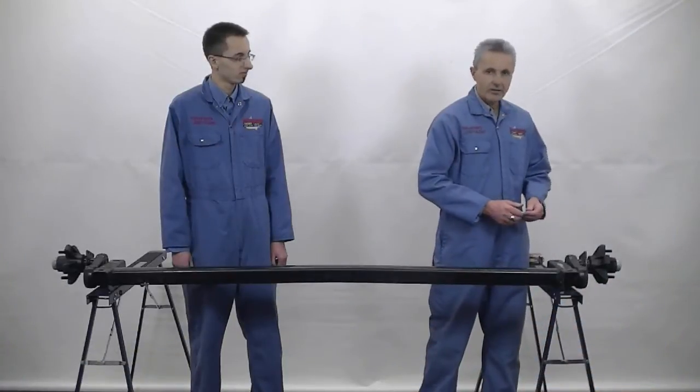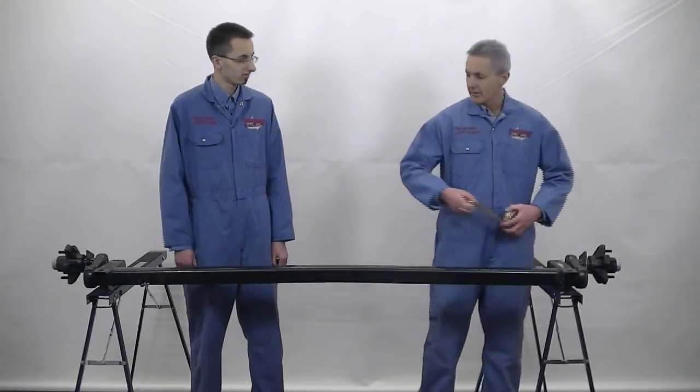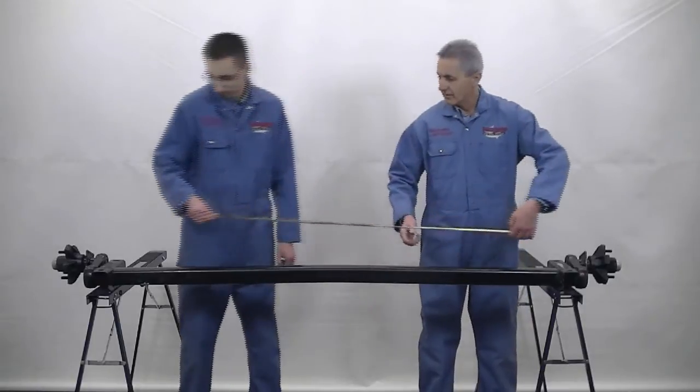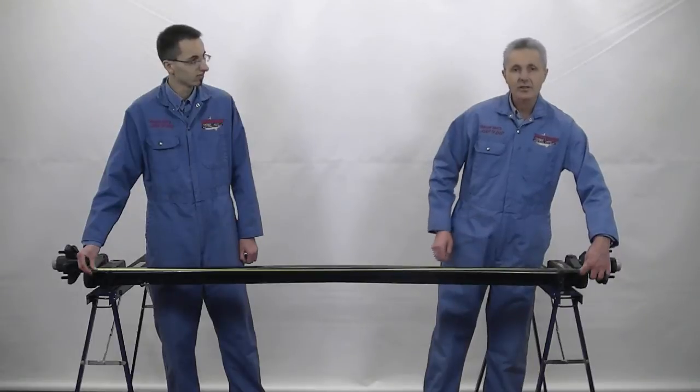And we're going to need to know the outside to the outside frame measurement of your trailer. In this case we have an outside to outside frame width of 72 inches.